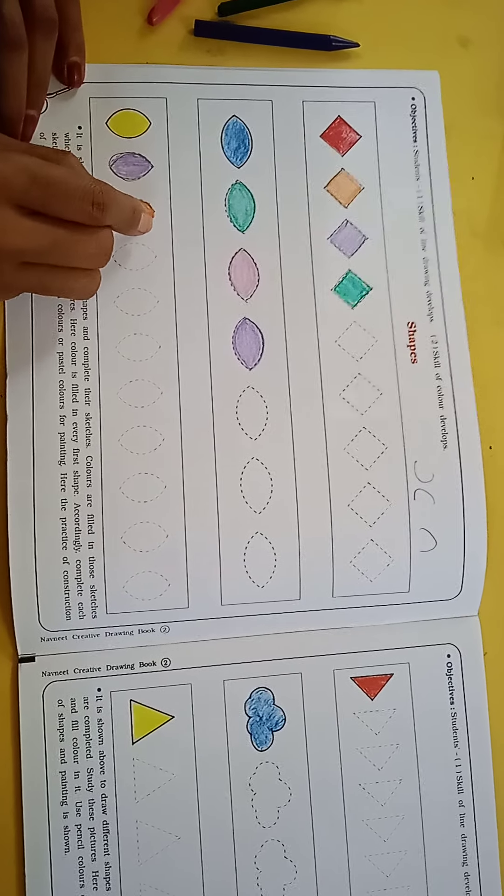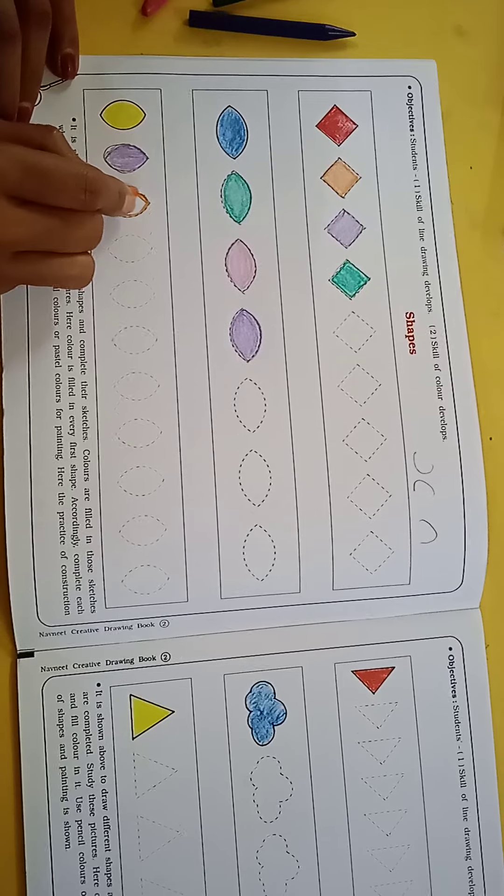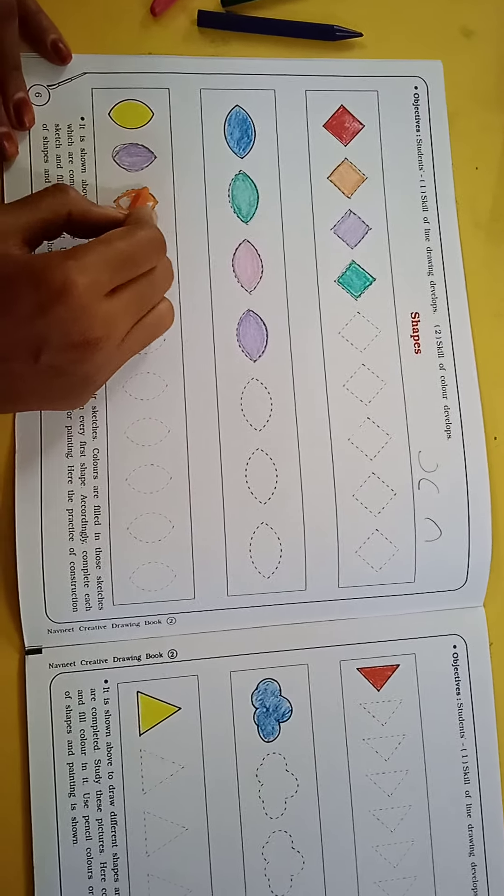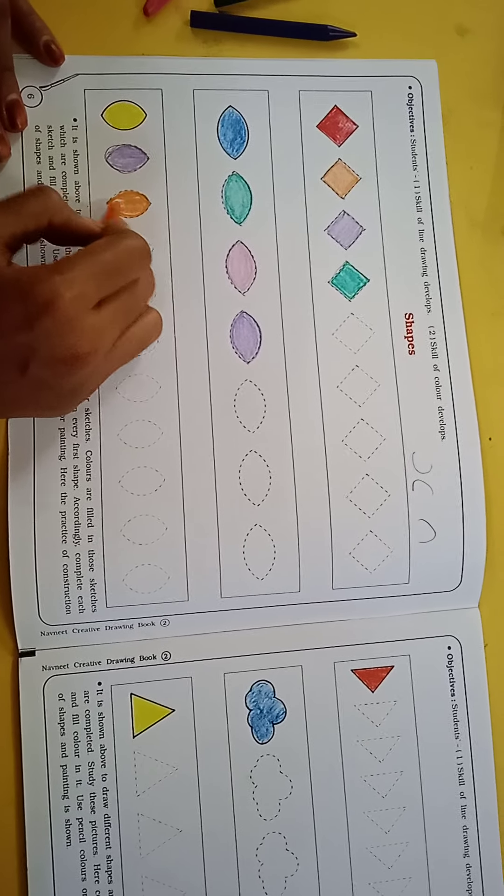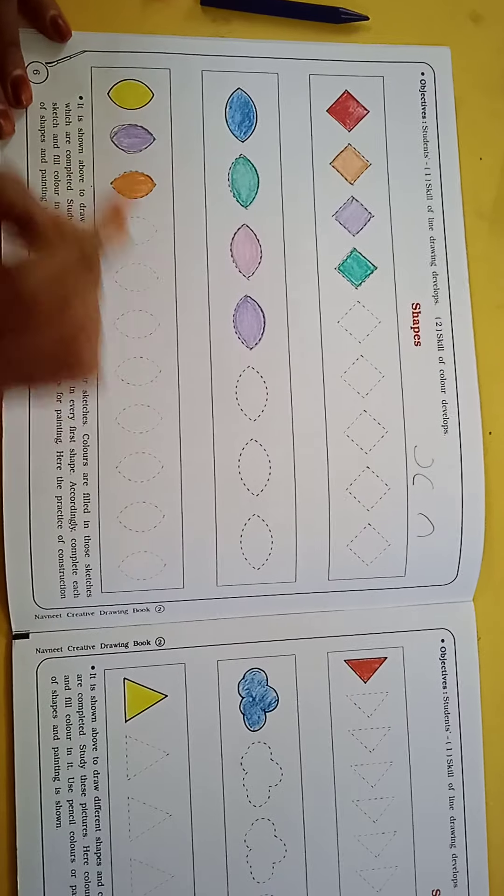Then, this is the opposite C and C. After making it first, we will color in the same way. If you fill the color in the same way, then the color is good.